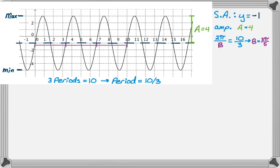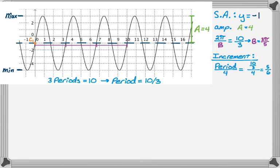Because the period is 10/3, I'll also need the increment. There are four increments per period, so the increment is 10/3 divided by 4, which is 5/6. Now let's pick a starting point — C1 is at zero. It goes intercept, maximum, so that's a positive sine graph. We fill in what we know: y equals 4·sin(3π/5 · x) minus 1.